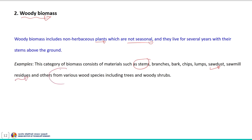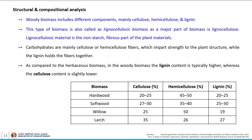Woody biomass also includes other sources of wood species including trees and woody shrubs. Structural and compositional analysis indicates that woody biomass includes different components — mainly cellulose, hemicellulose and lignin — and this type of biomass is called lignocellulosic biomass as the major part is lignocellulose. Lignocellulose material is the non-starch, fibrous part of the plant. Cellulose content in this biomass is relatively low compared to lignin, whereas lignin content is relatively higher than cellulose.